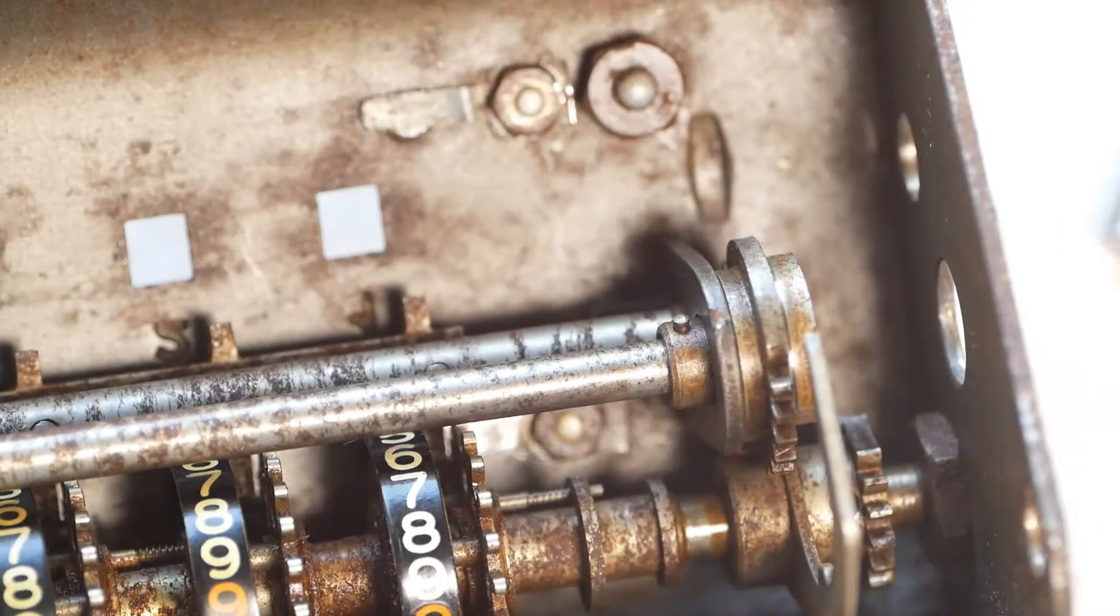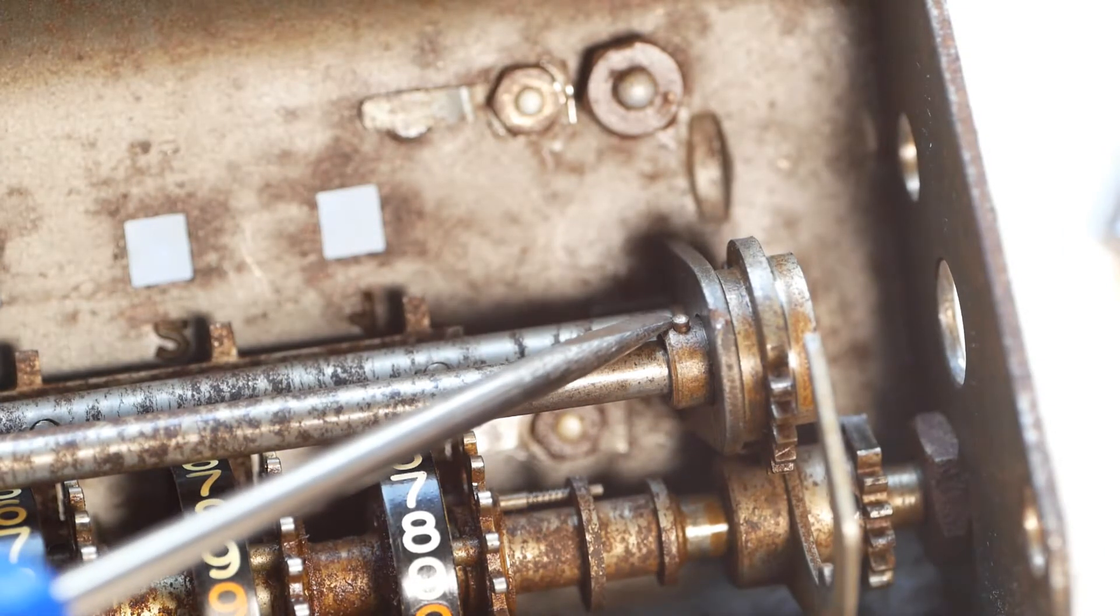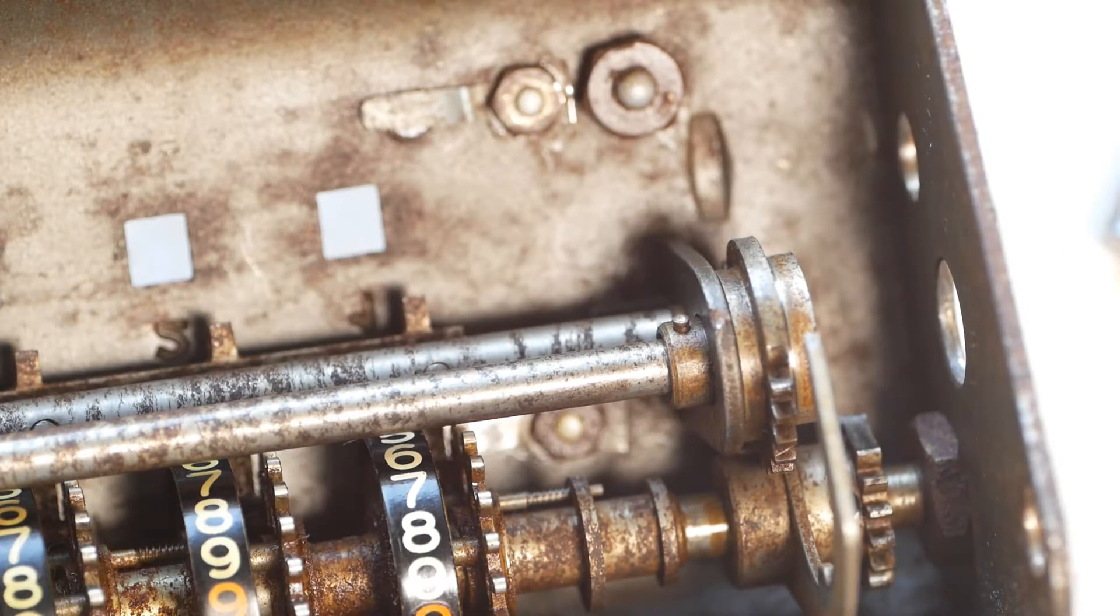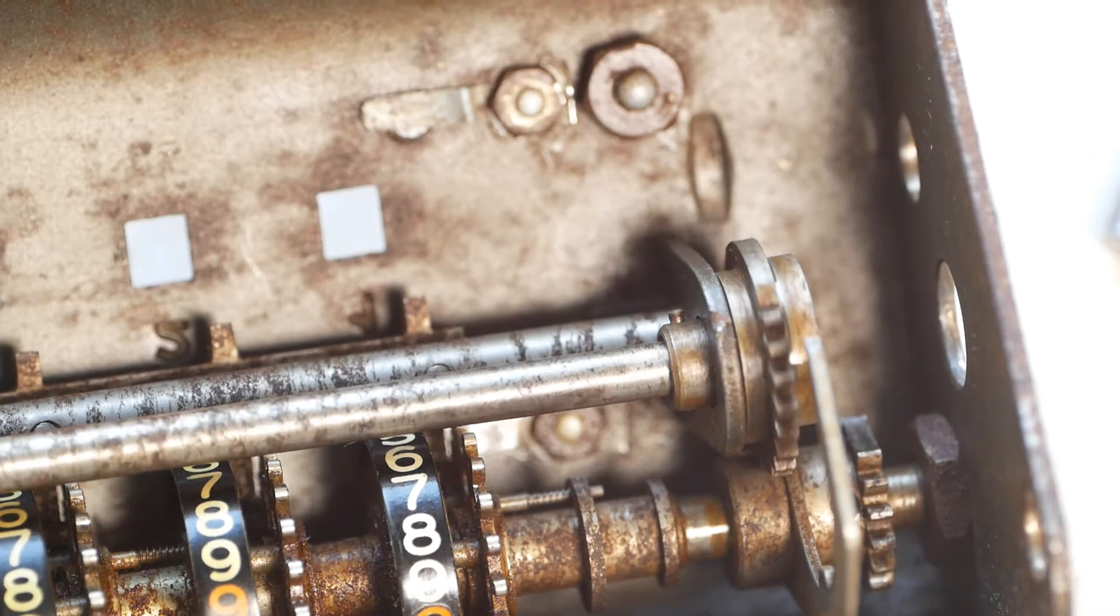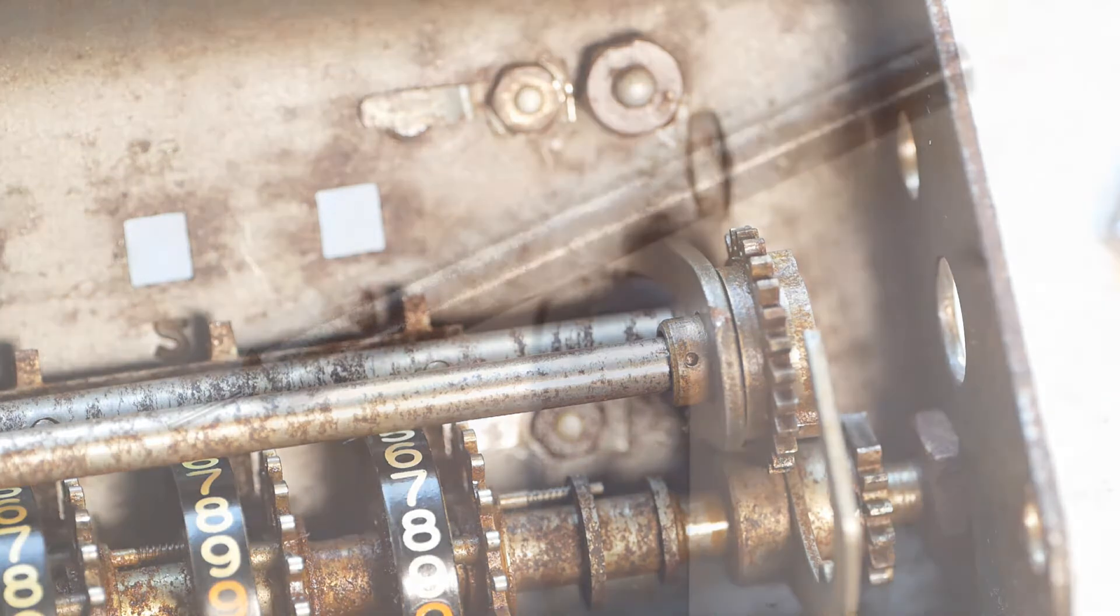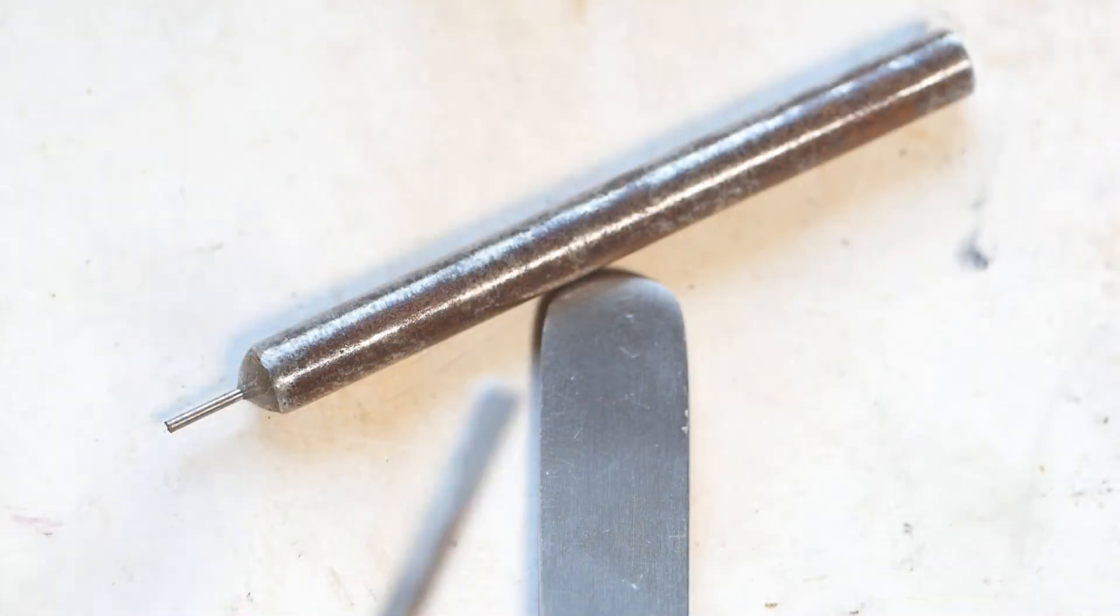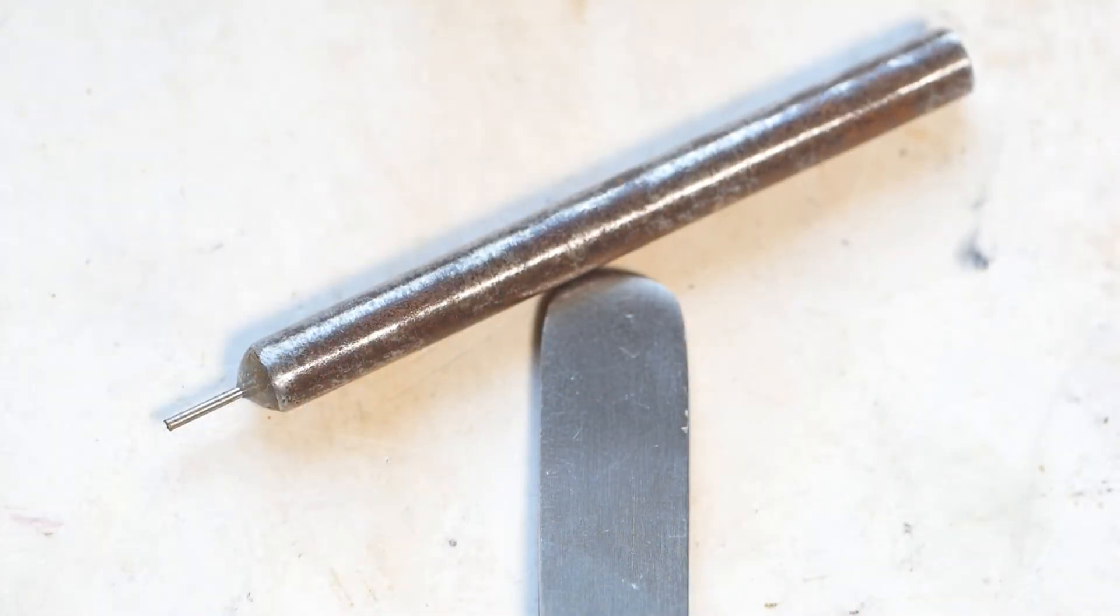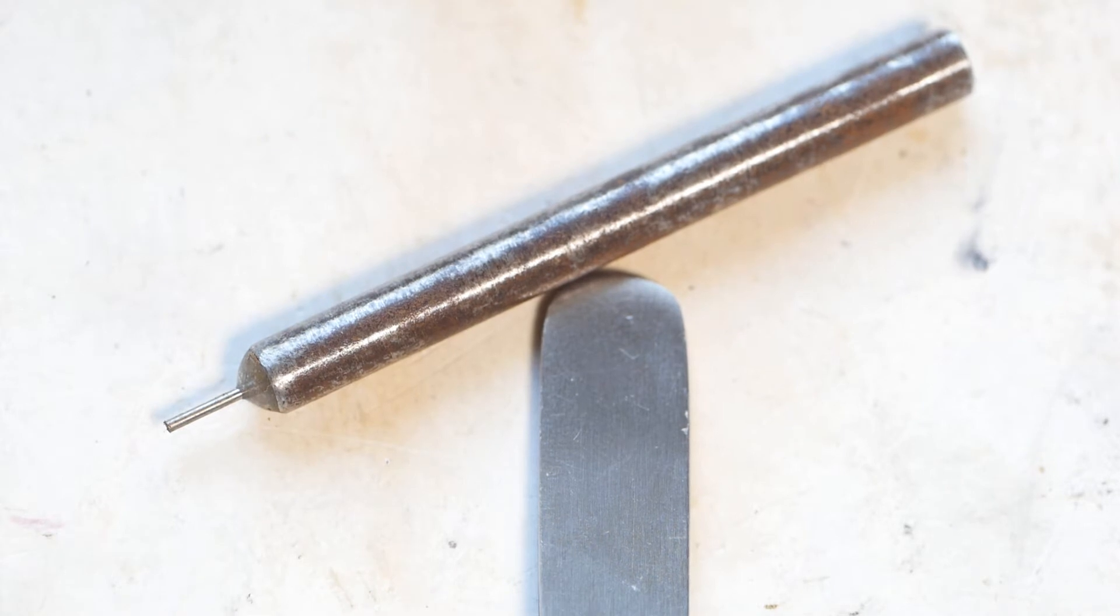To remove the second gear, we need to drift out the taper pin that attaches it to the carriage lifting shaft. It needs a drift slightly less than 1mm in diameter. I didn't have one of those, so I made one of my own. The main shaft is part of a 6 inch round nail, with a 1mm hole bored in the end, and then the shaft of a broken 0.9mm drill bit, cut to length, and bonded in place with epoxy resin.